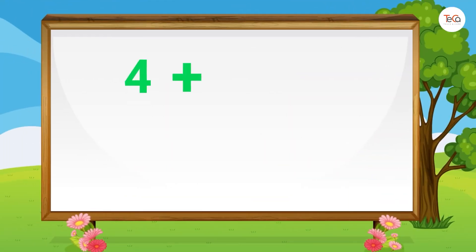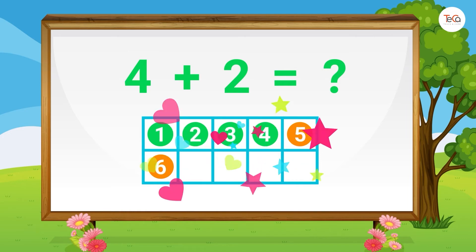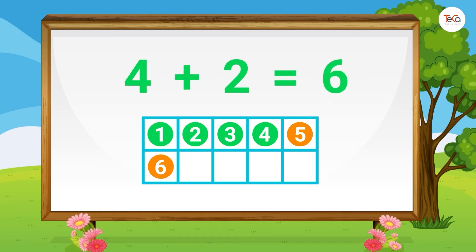Next, 4 plus 2 equals... Draw 4 dots, then 2 dots. Here we have 6 dots in total. So 4 plus 2 equals 6.